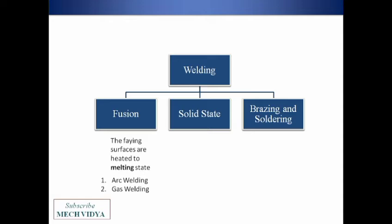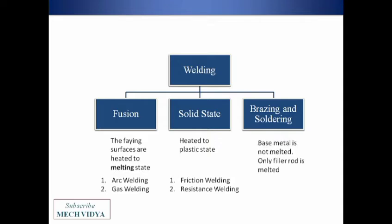In solid state welding, the joining edges are not melted but heated to a plastic state and then joined using pressure or force. For example, in friction welding or resistance welding, we use this solid state welding technique. Finally, in brazing and soldering, the base metal is not disturbed at all — only the filler rod is melted. Brazing and soldering joints have the lowest strengths among all welding techniques.